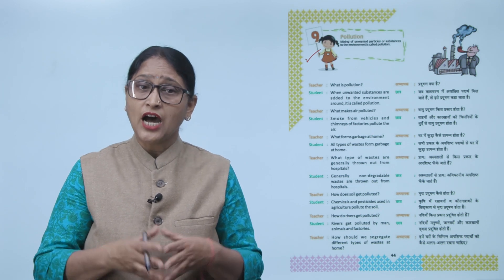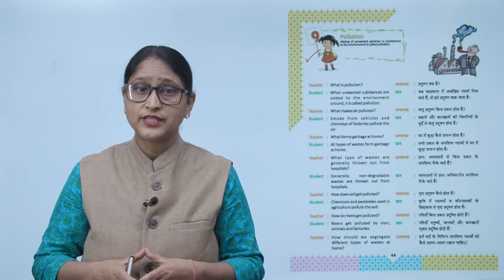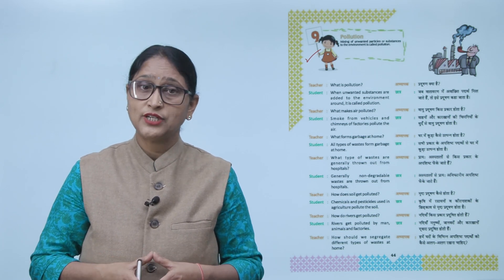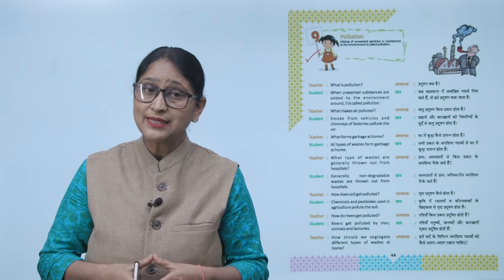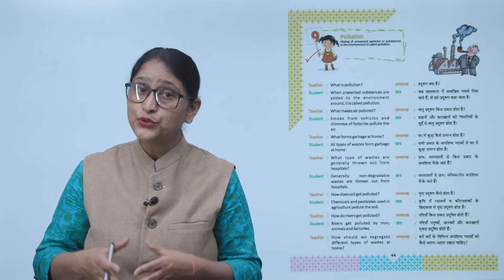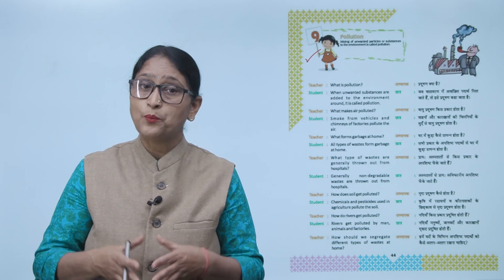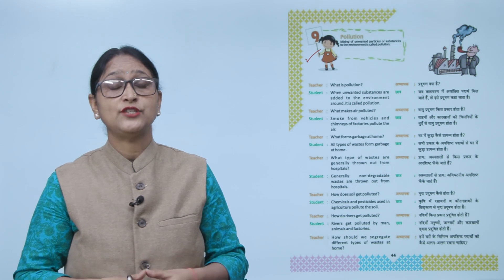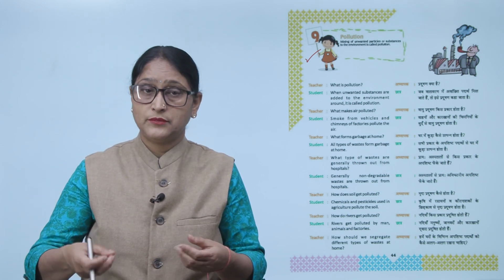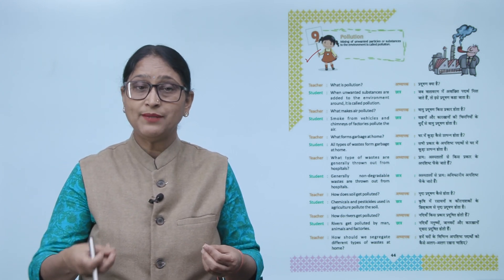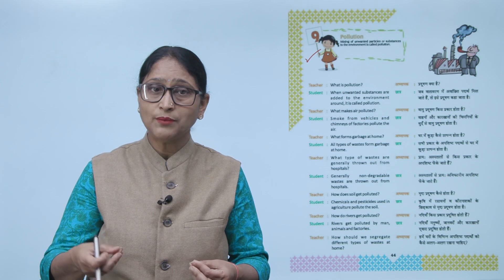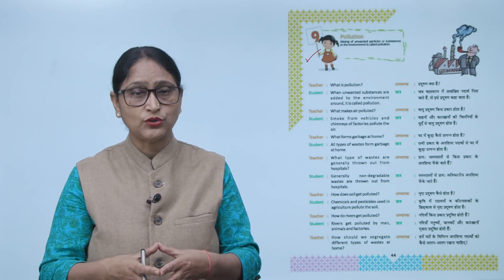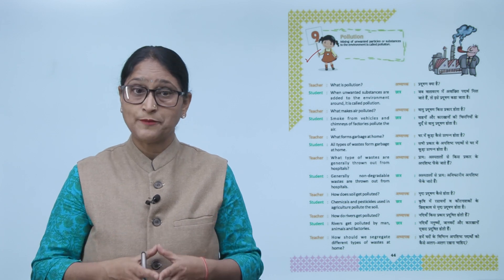Teacher: How does soil get polluted? जो soil होती है — हमारी मिट्टी — वो कैसे polluted होती है? Student: Chemicals and pesticides used in agriculture pollute the soil. जो हम chemicals use करते हैं और जो pesticides डालते हैं — उनकी वजह से जो हमारी soil होती है, वो polluted हो जाती है।